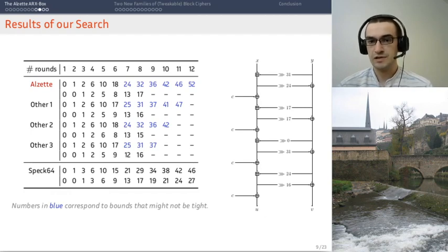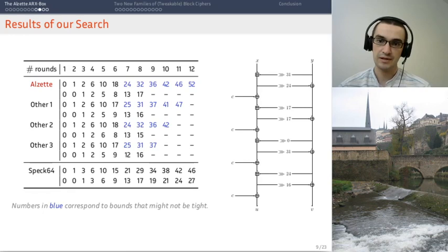I won't go over the specifics of how we have chosen the round constants. Because that would take me very far. But we have found that if we use the same constant in each round, then it's fine. And we have chosen them carefully to optimize even further the linear properties.